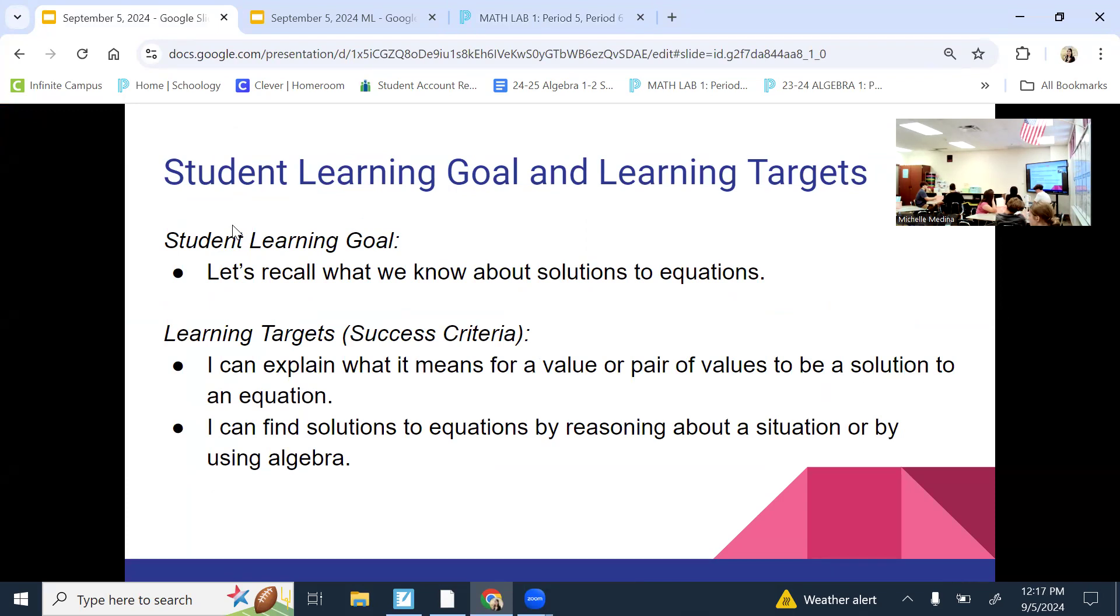If you can explain what it means for a value or pair of values to be a solution to an equation, then you met the goal. So, like, table one, what does it mean for something to be a solution to an equation? The value of the variable. The value of the variable that makes it true. Good. Perfect.